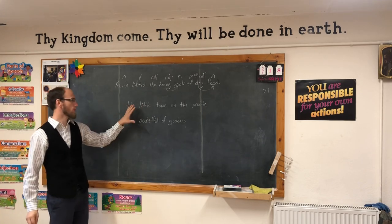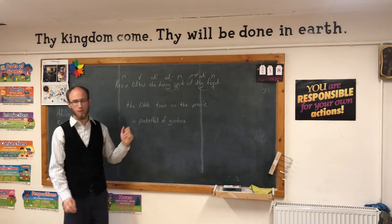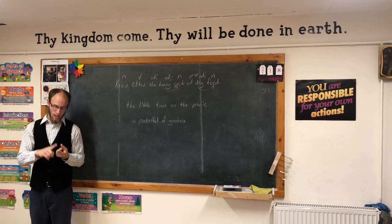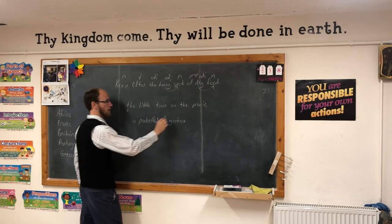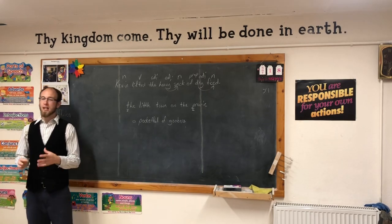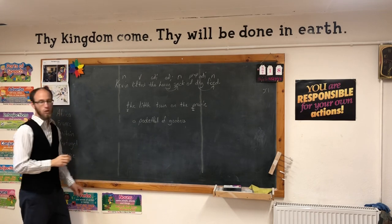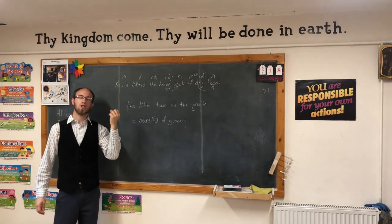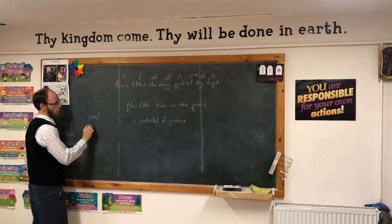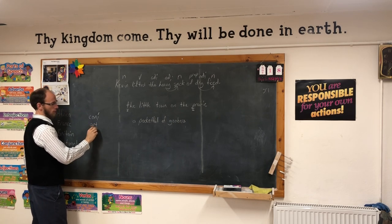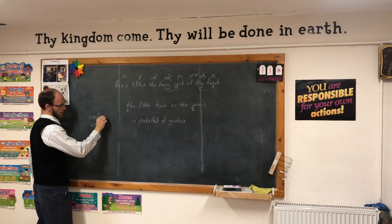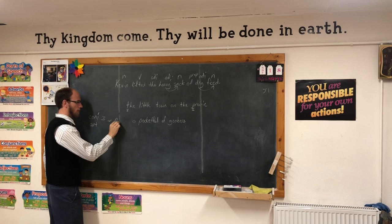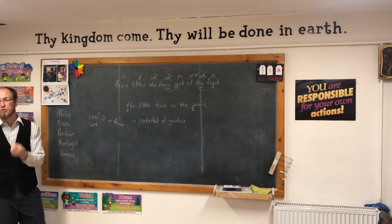Today's lesson is how to capitalize words in titles — like the title of a book: 'The Little House on the Prairie.' Which words do we capitalize? Here are some rules. First of all, always capitalize the first and the last word. Then, the only words you do not capitalize are conjunctions, prepositions, or articles of three letters or fewer. Three or fewer letters.